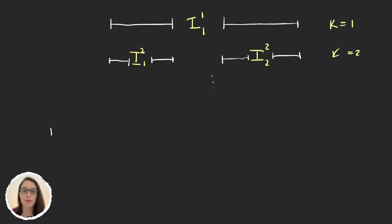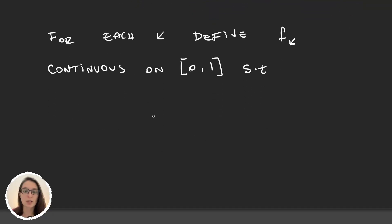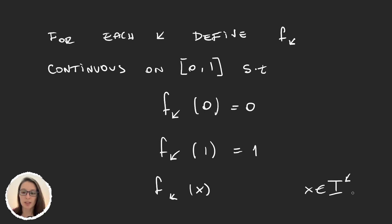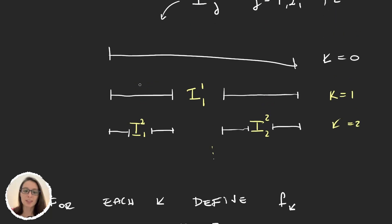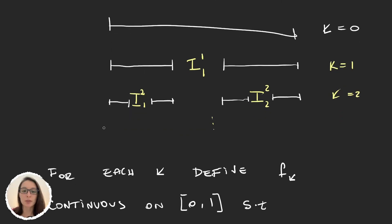Now what we will do is define for each k a function f_k that will be continuous on [0,1]. For every k, f_k(0) equals 0 and f_k(1) equals 1. Then whenever we take some number x that's in i_k,j for some k and j, f(x) will be defined as j times 2^(-k). On the rest of the elements, on these empty spaces, it will be defined linearly.